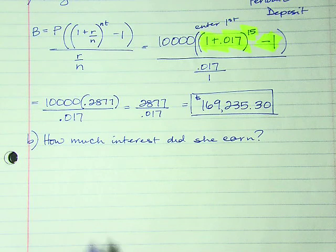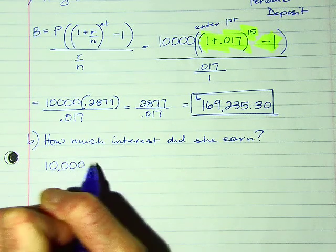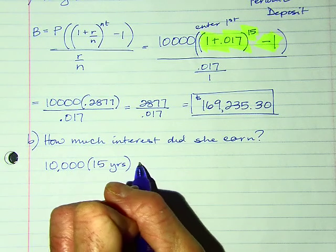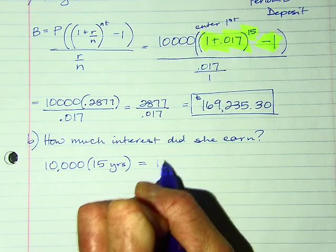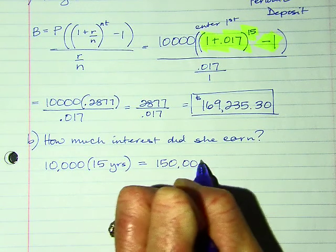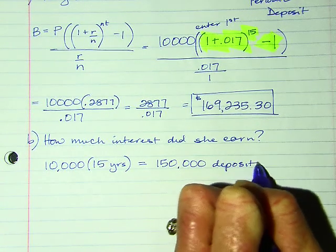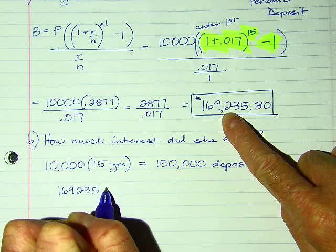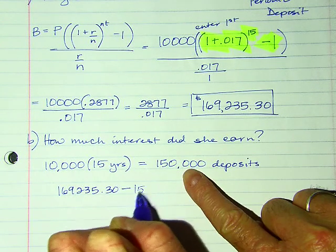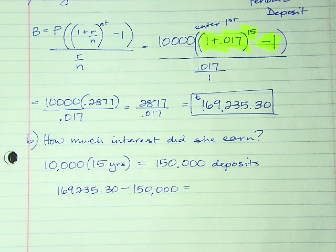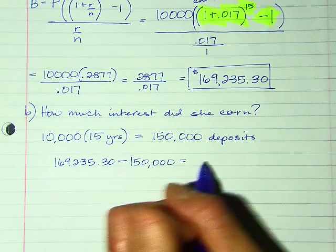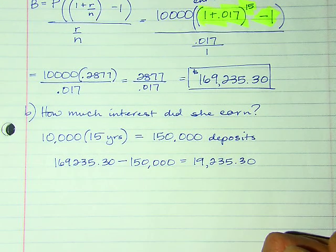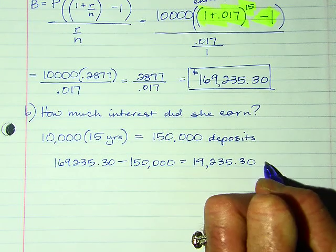First, we have to figure out how much she deposited. She deposited $10,000 for 15 years, so her total deposits were $150,000. Taking her total of $169,235.30 and subtracting what she deposited, the difference is her interest: $19,235.30. She earned about $19,000 in interest.